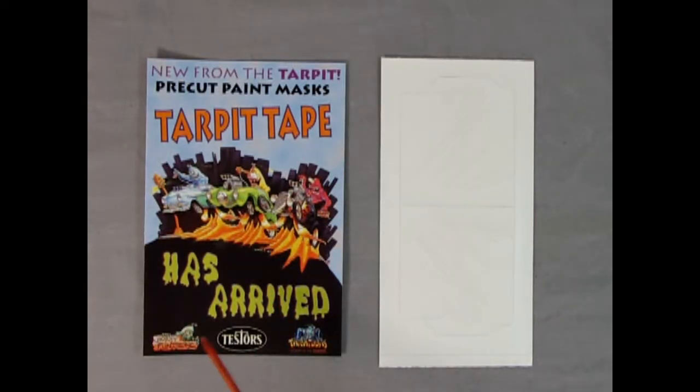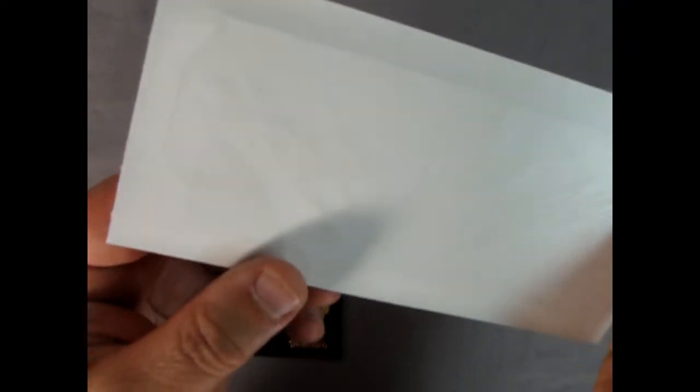The tar pit tape has arrived! This is Jimmy Flintstone's new tar pit pre-cut masks and this is what it looks like. Can you see that? Yeah you can see that. There's all these little lines that are in that kind of 90s splash effect.